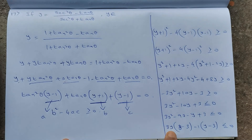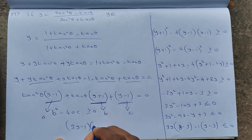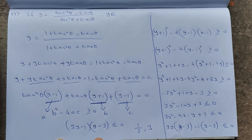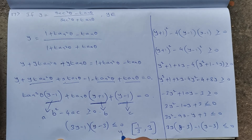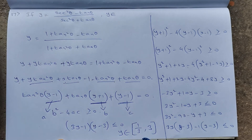The factors give zeros at y = 1/3 and y = 3. Since the inequality is ≤ 0 with closed brackets, y belongs to [1/3, 3].